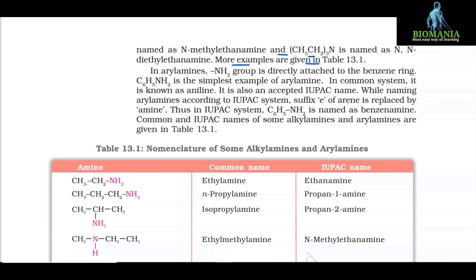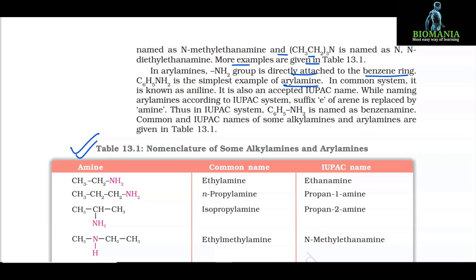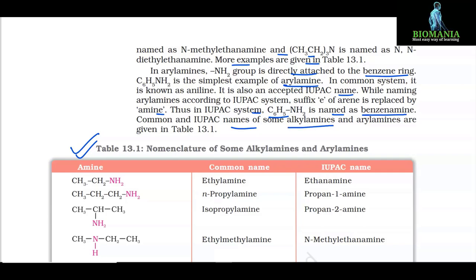More examples are given in table 13.1. In aryl amines, the NH2 group is directly attached to the benzene ring. C6H5NH2 is the simplest example of aryl amine; in the common system it is known as aniline, which is also an accepted IUPAC name. In the IUPAC system, the suffix 'e' of arene is replaced by 'amine', so C6H5NH2 is named as benzenamine. Common and IUPAC names of some alkylamines and aryl amines are given in table 13.1.